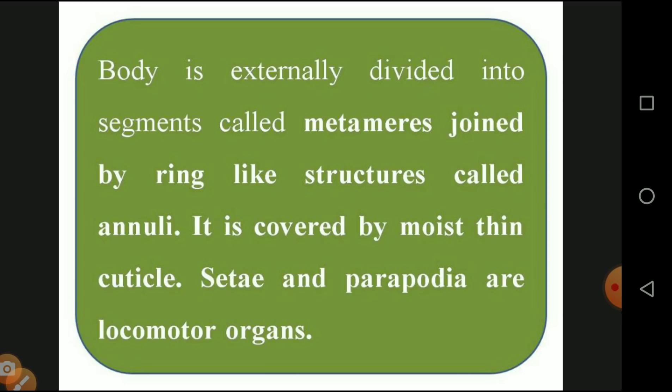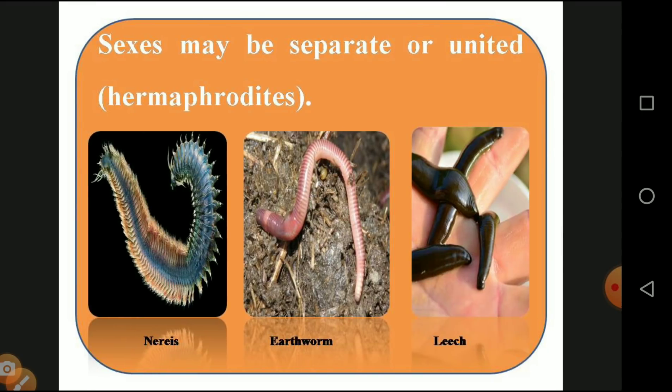The body is externally divided into segments called metameres, joined by a ring structure called annuli. The entire body is covered with segments; these are continuously connected by ring-like structures called annuli. It is covered with a moist thin cuticle — moist meaning watery, thin meaning very soft — providing protection. Setae and parapodia are locomotor organs; setae are inside the segment and parapodia are on the skin, allowing the organism to move, search for food, and avoid predators.